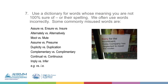Rule number seven is making sure that you're using the correct word based on what it means. There is a thing called a dictionary. If you're using a tablet, you probably have a dictionary app. It's really important to go through and look at those words and make sure that you are using the right word at the right time.